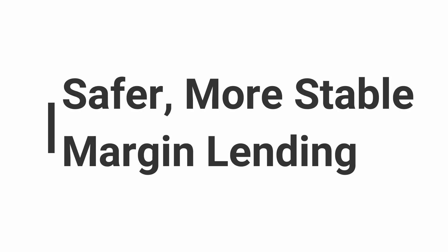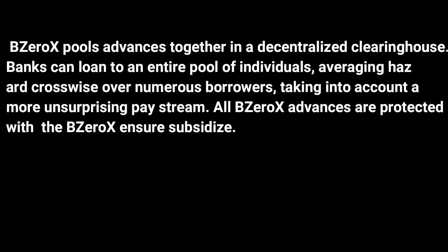Feature number four: safer, more stable margin lending. B0X pools loans together in a decentralized clearinghouse. Lenders can loan to an entire pool of individuals, averaging risk across numerous borrowers, allowing for a more predictable income stream. All B0X loans are protected with the B0X insurance fund.